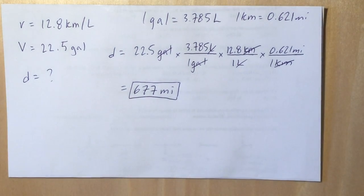Okay, so this problem is asking us if we have a car that has a fuel economy of 12.8 kilometers per liter and we have 22.5 gallons in the thing, how far can it drive?